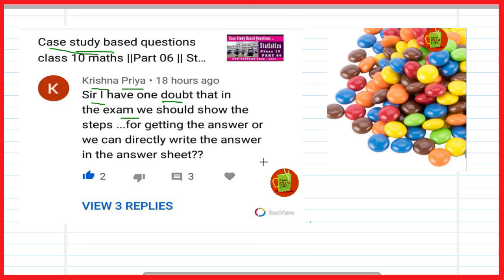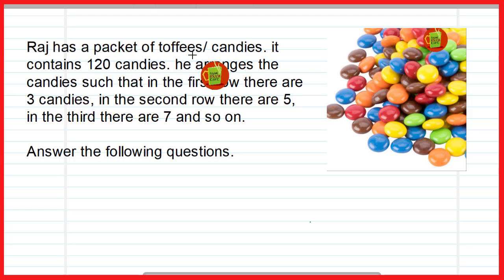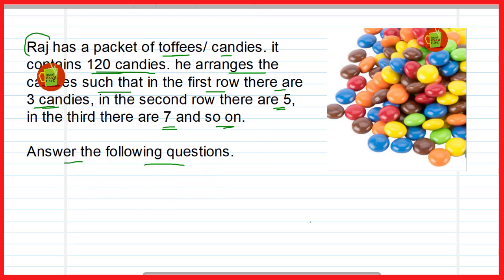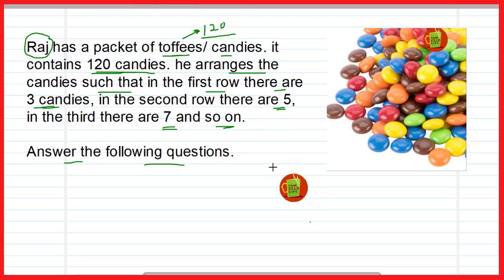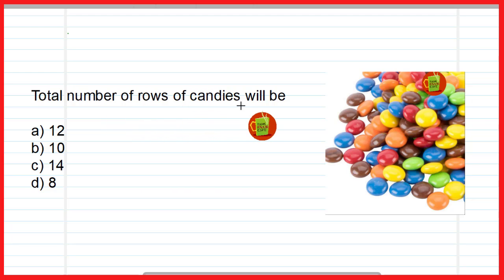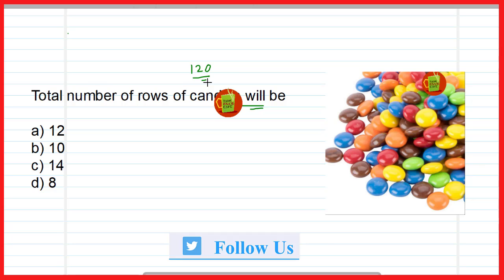Now here we will see the question. Raj has a packet of toffees or candies containing 120 candies. He arranges the candies such that in the first row there are three candies, in the second row there are five, in the third row there are seven, and so on. Answer the following questions. The first question is: what is the total number of rows of candies? There are 120 candies and you have to find the total number of rows.